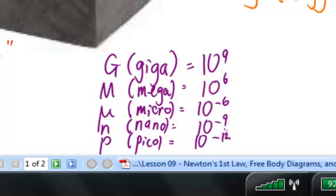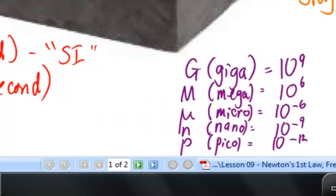You'll become proficient at writing these with their appropriate multipliers. Giga is 10 to the 9th. Mega is 10 to the 6th. Micro is 10 to the minus 6th. Nano is 10 to the minus 9th. Pico is 10 to the minus 12th. Kilo is 10 to the 3rd. Centi is 10 to the 2nd. Milli is 10 to the minus 3. You'll become proficient at writing these in their appropriate multipliers during this course.